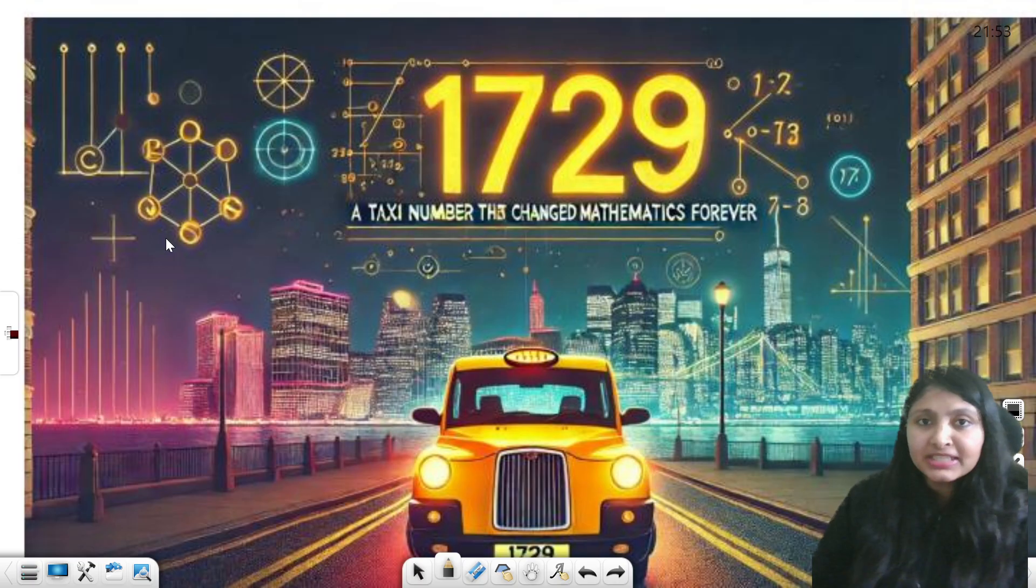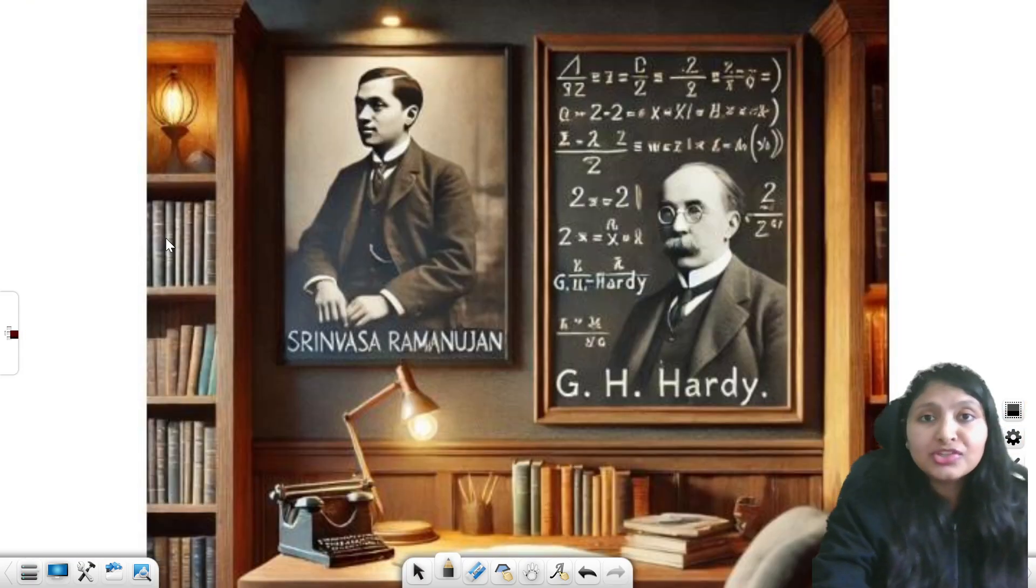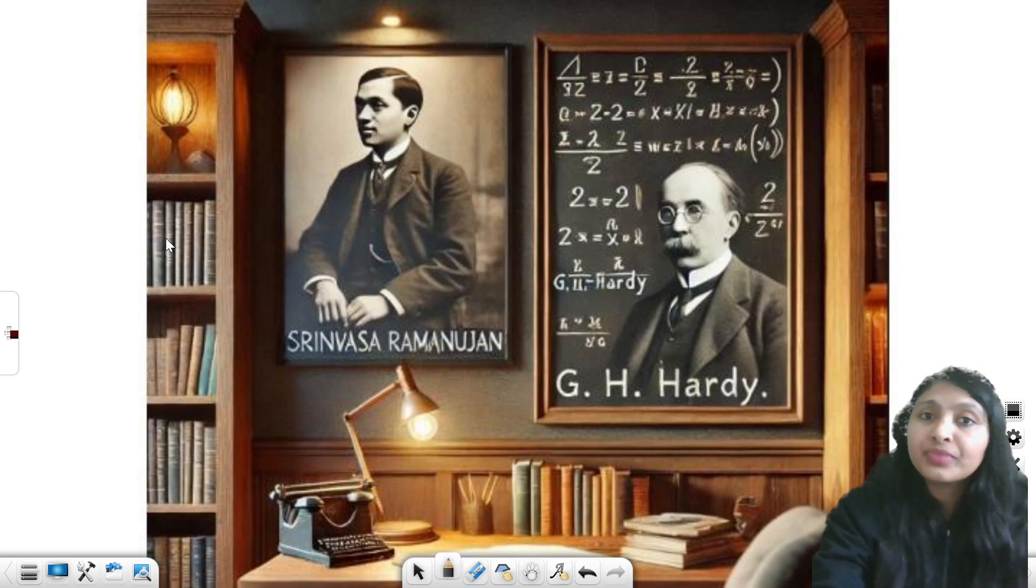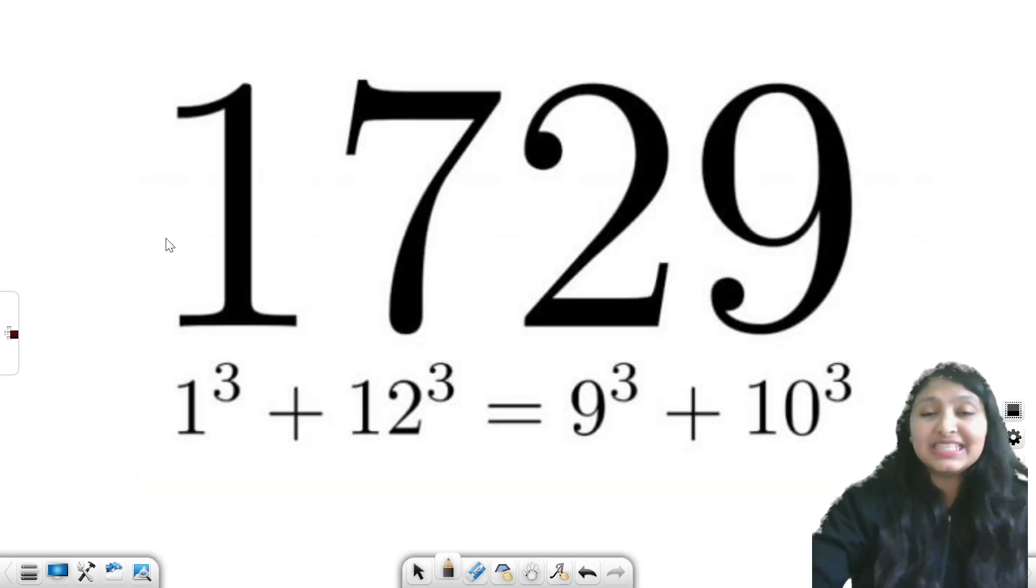What is going to be that? So the numbers are 1 cube and 12 cube. If we are going to see, the sum is going to come out to be 1 plus 1728, that is 1729. That's one way.